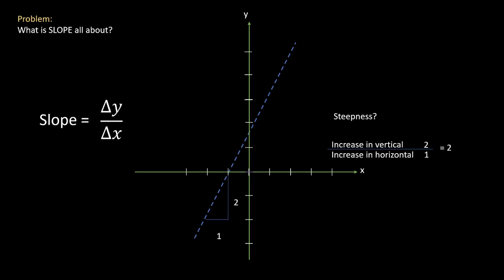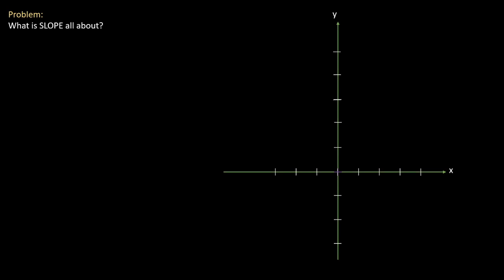A change in y and a change in x ultimately creates our slope. We treat this as a fraction, and what it tells us is that our slope is the number two. No matter the line, we can always mathematically calculate the slope based on its change in vertical versus change in horizontal. Looking at the equation of a line, we have some samples we want to take.